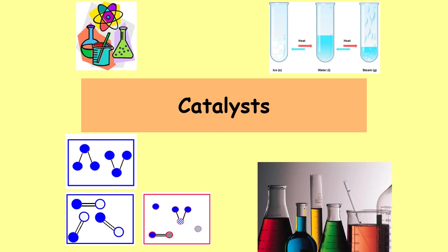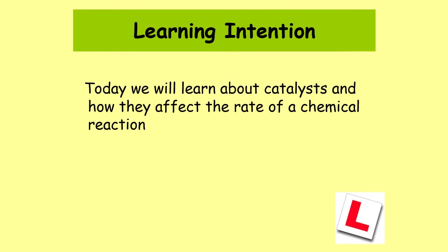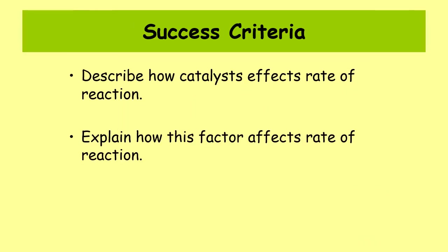This is a National 4 and National 5 chemistry lesson on rates of reaction. Today's lesson is going to look at catalysts — how they affect the rate of a chemical reaction. By the end of today's lesson you will be able to describe and explain how catalysts affect the rate of reaction, and define two different types of catalysts.